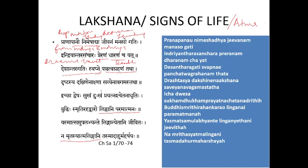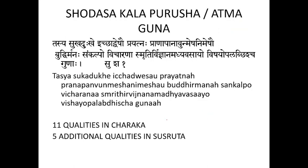When there is absence of all these signs, it is called the state of death. That is about the signs of life or signs of Atma. Next, Atma Guna — the qualities of Atma — as told by Sushruta in Sushruta Sharira Sthana, first chapter. Sushruta describes 16 features, called Shodasha Kalapurusha.